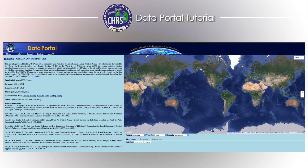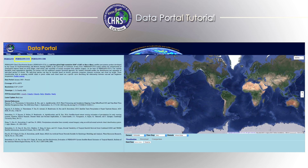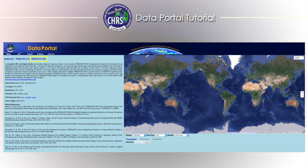CHRS's Data Portal is an exceptional tool for doing self-guided research on global rainfall through time. At the heart of the Data Portal is the expansive archive of past rainfall data from three different rain modeling systems: PERSIANN, PERSIANN CCS, and PERSIANN CDR.